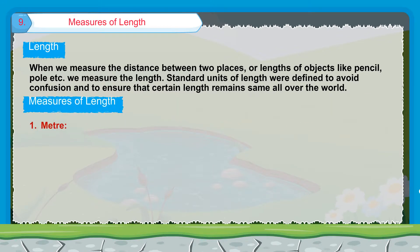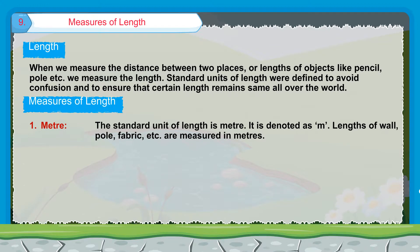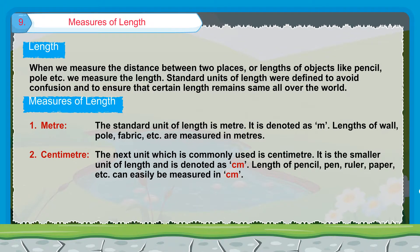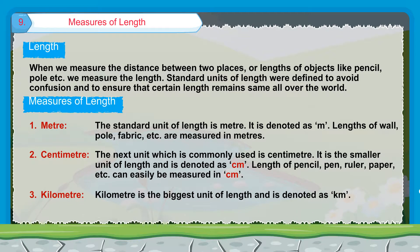Measures of length: 1. Meter — The standard unit of length is meter, denoted as m. Lengths of walls, poles, fabric, etc. are measured in meters. 2. Centimeter — The next commonly used unit is centimeter, the smaller unit of length, denoted as cm. Lengths of pencil, pen, ruler, paper, etc. are measured in centimeters. 3. Kilometer — Kilometer is the biggest unit of length, denoted as km.